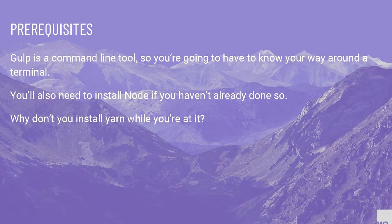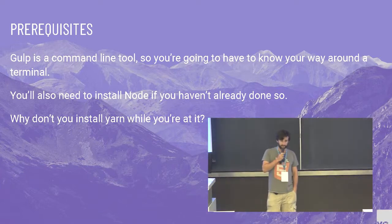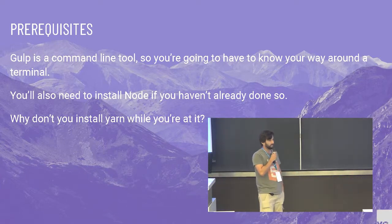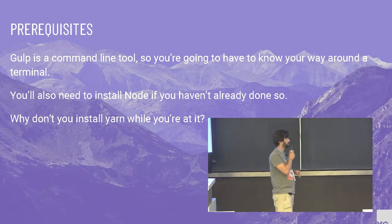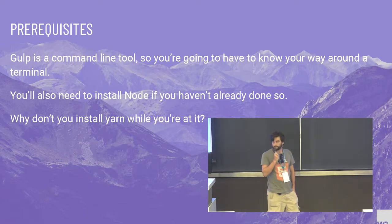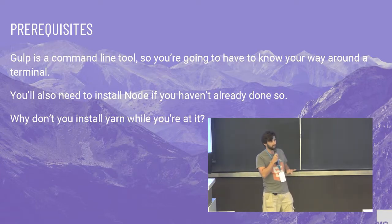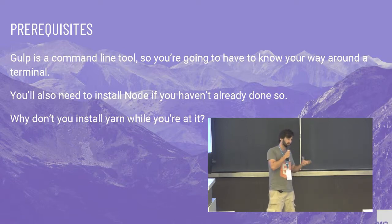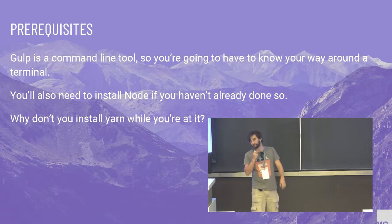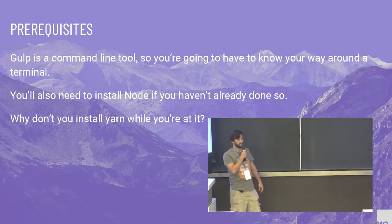What you should know about Gulp: it's a command line tool. If you're afraid of the terminal, don't be — it's not that scary. You just have to know a few keywords and you should be good. If you don't have Node, you're going to need that. Node comes with the npm package installer, so you'll need that as well — it's all bundled up. And why not install Yarn while you're at it? It's better.